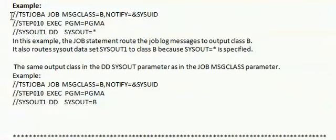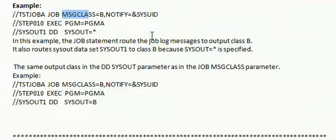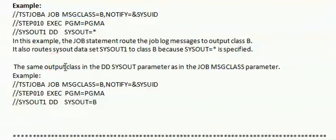In the first example, the job statement routes the job log messages to output class B. It also routes the SYSOUT datasets — that is SYSOUT=* — to class B, because SYSOUT equal to star specifies the same output class in the DD SYSOUT parameter as in the job message class parameter.